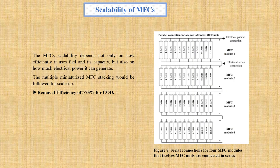The scalability of microbial fuel cells depends not only on how efficiently it uses fuel and its capacity, but also on how much electrical power it can generate. Multiple miniaturized microbial fuel cell stacking would be used for scale-up. A group of researchers developed a 200-liter modular microbial fuel cell stack (Figure 8), which generated approximately 200 milliwatts of power. This system comprised four MFC modules containing 12 tubular MFC units (2 liters per unit), connected in parallel then in series. It achieved a removal efficiency of greater than 75% for chemical oxygen demand, 90% for suspended solids, and 68% for ammonium nitrogen.